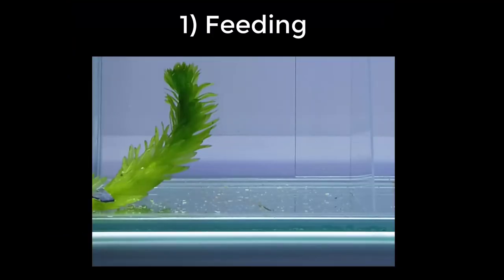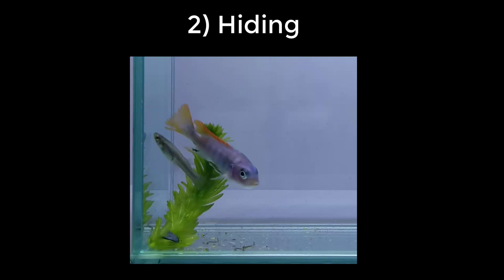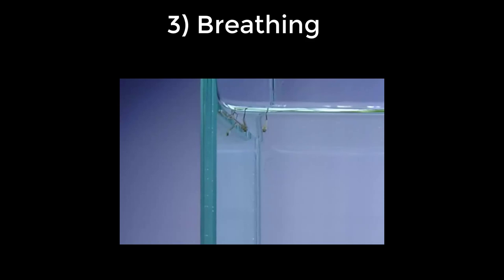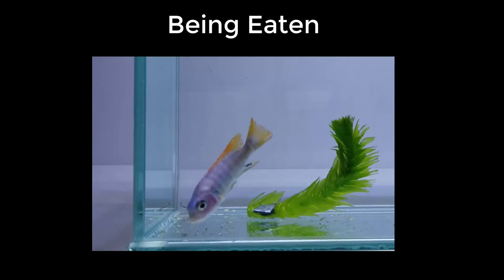The four behaviors are: 1. Feeding — mosquito larvae will slowly be moving along the bottom of the tank as they graze on microalgae. 2. Hiding — the larvae will be using the plant as cover. 3. Breathing — the larvae are angled downwards with their siphons at the surface. 4. Swimming — this is self-explanatory. In addition, we want you to record if a mosquito does get eaten.